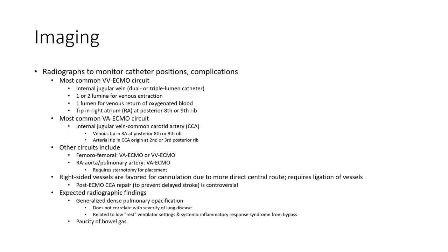Most common VA ECMO. Cheap in the right atrium at posterior 8 or 9 ribs. Arterial chip in CA origin at second or third posterior rib. Other secrets include femoral femoral V-A ECMO or V-V ECMO. All hair are atrium from marine artery V-A ECMO. Require sternotomy for vessel.